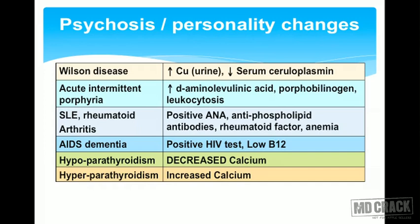Psychosis and personality changes may be associated with various illnesses. Number one is Wilson's disease, which is related to copper metabolism. You might find more copper being excreted in the urine and decreased serum ceruloplasmin levels.